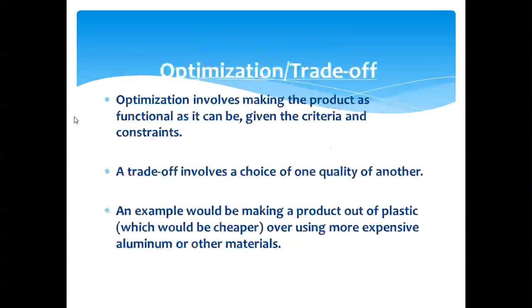Optimization means making the product as functional as it can be given the criteria and constraints. For example, one telephone has very good visual and takes a nice image, but the voice is not clear. Another telephone has very good clear audio but the camera is not good. As a photographer, you will select the first one because your job needs it — so it is a trade-off. You cannot always get everything at the same time; you take what is necessary and most helpful for you.